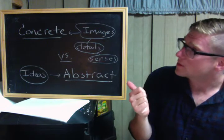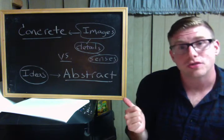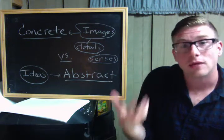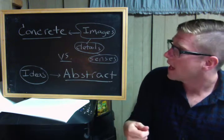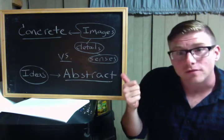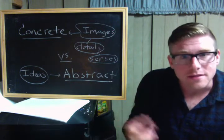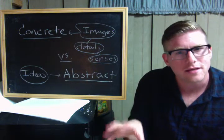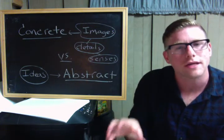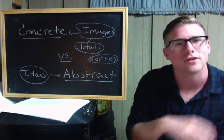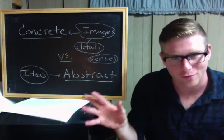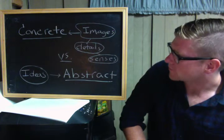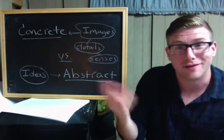And it comes down to the difference between concrete and abstract. So concrete images are exactly what we've been talking about so far. And that's the sensory details from the world. Particular things, things that you can see, smell, taste, touch, et cetera. These are the things that go into poems, concrete details. And you're going to see me writing that all over your poems, more concrete details.